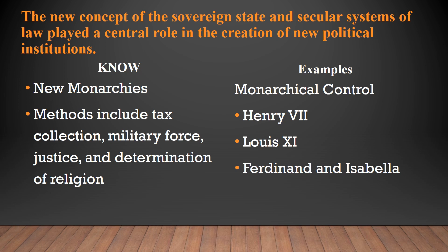The new concept of the sovereign state and secular systems of law played a central role in the creation of new political institutions, generally known as the new monarchies. They coincided with the voyages of discovery and exploration, as well as the Renaissance and Reformation periods. Methods included tax collection, utilization of war and increased military force, expanding justice within their domains, creating a more uniform legal system, and the determination of religion within their realm. Examples we will focus on include Henry VII of England, Louis the Spider of France, Ferdinand and Isabella of Spain, and Charles V and the Holy Roman Empire during the early 16th century.